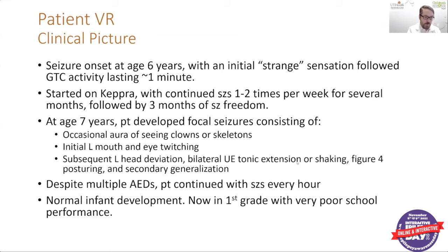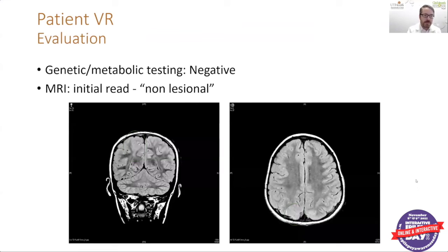Despite multiple anti-seizure medicines, the patient was continuing with seizures on an almost hourly basis. Her parents had reported normal development, but she was in first grade with very poor school performance given the frequency of seizures. Her initial genetic and metabolic testing was found to be normal or negative. She had an MRI brain as well, which the initial read was determined to be non-lesional with no specific structural abnormalities noted.